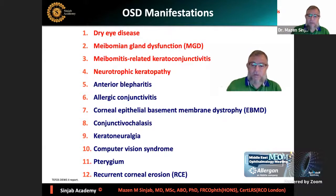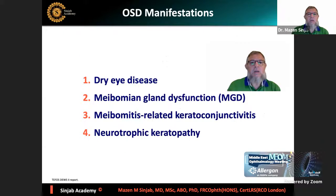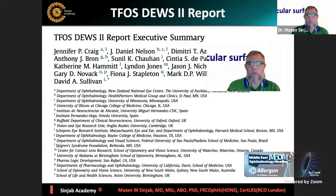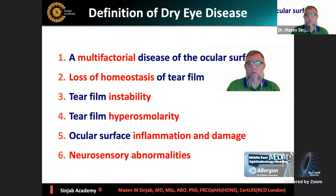In this lecture, I'm going to highlight very important tips for general ophthalmologists regarding the first four diseases. Regarding dry eye disease and meibomian gland dysfunction together - according to the TFOS DEWS2 report - the definition of dry eye disease is a multifactorial disease of the ocular surface characterized by loss of homeostasis of the tear film, leading to tear film instability and hyperosmolarity, causing inflammation and damage to the ocular surface. In addition, it is associated with neurosensory abnormalities.